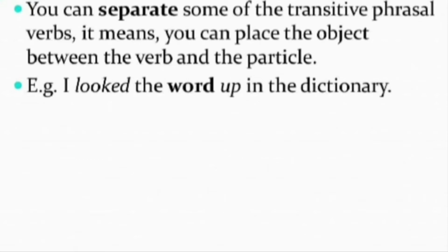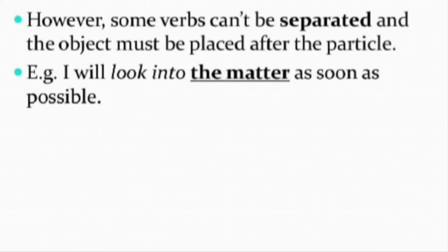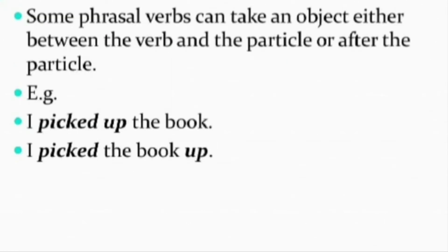You can separate some transitive phrasal verbs — it means you can place the object between the verb and the particle. For example, 'I looked the word up' instead of 'looked up the word.' However, some verbs cannot be separated, and the object must be placed after the particle — for example, 'I will look into the matter'; we cannot write 'I will look the matter into.' Some phrasal verbs can take an object either between the verb and particle or after the particle: 'I picked up the book' or 'I picked the book up.'